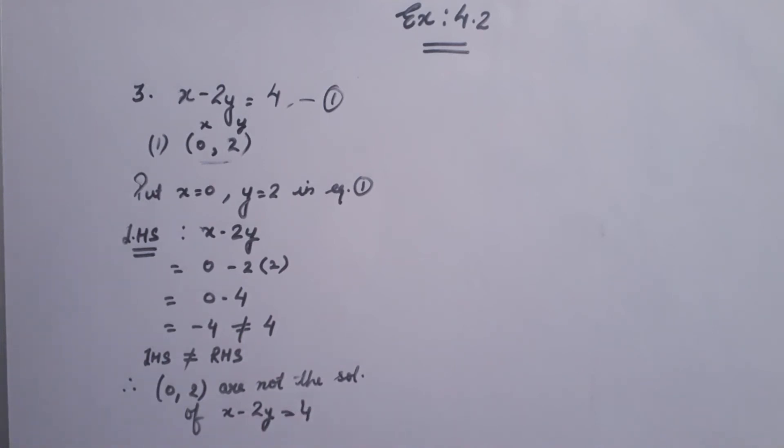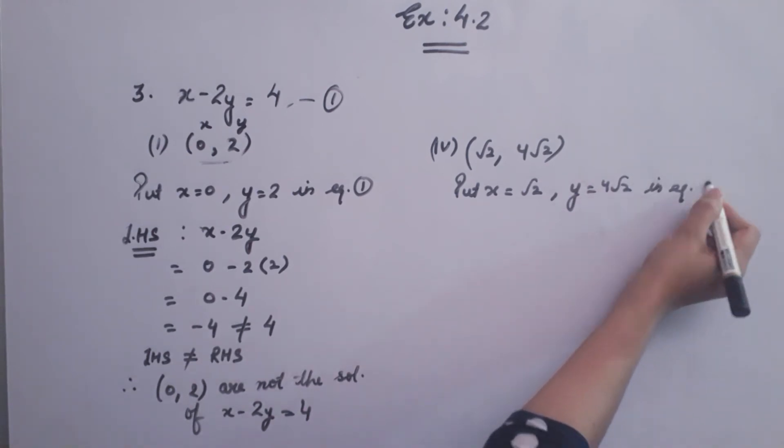Similarly, by doing the other parts, same process will be used. I am doing the fourth part. There we have root 2 and 4 root 2. Put x is equals to root 2 and y 4 root 2 in equation 1. This is the equation 1.